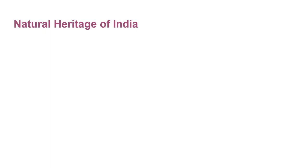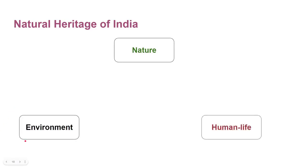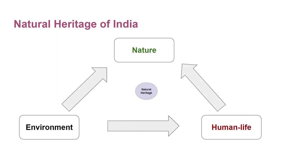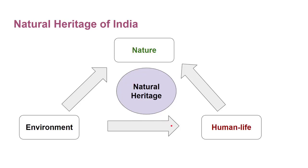What do you mean by natural heritage? Can you guess its meaning from the name? Natural means something related to nature. Now can you tell me which things are naturally available? Those things are called natural heritage. The result of a close relationship between nature, environment, and human life is natural heritage. Natural heritage is unique and varied.